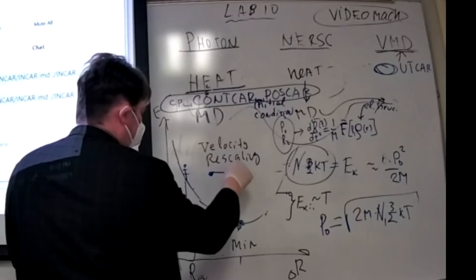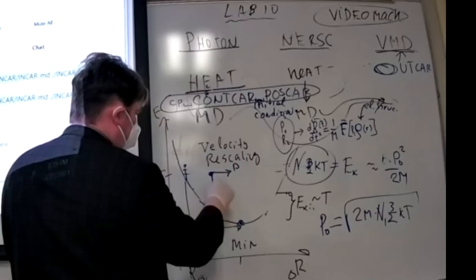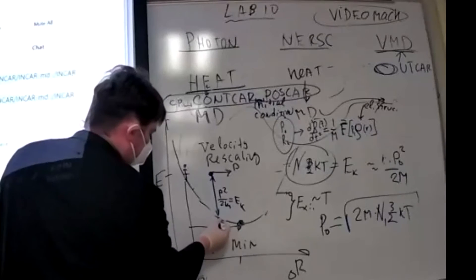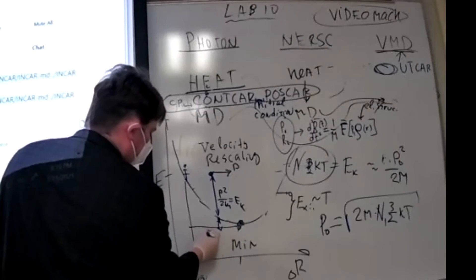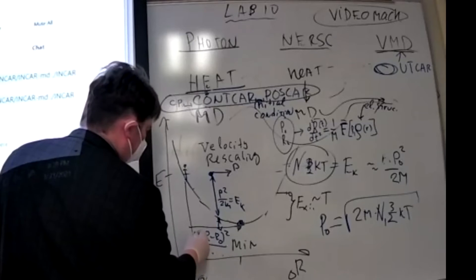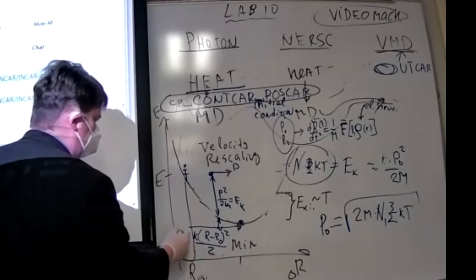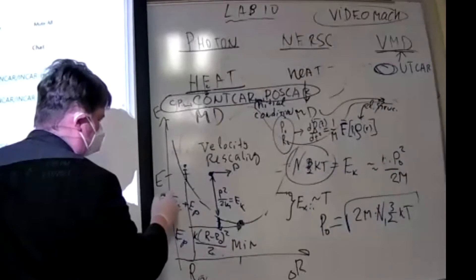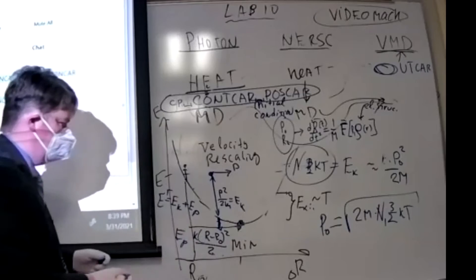Momentum. Momentum squared over 2m is kinetic energy. And the distance minus equilibrium distance squared is potential energy. Okay. So this arrow. And kinetic plus potential is total energy which is conserved. Okay.